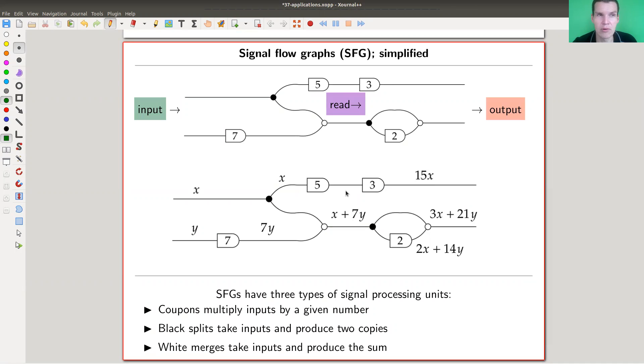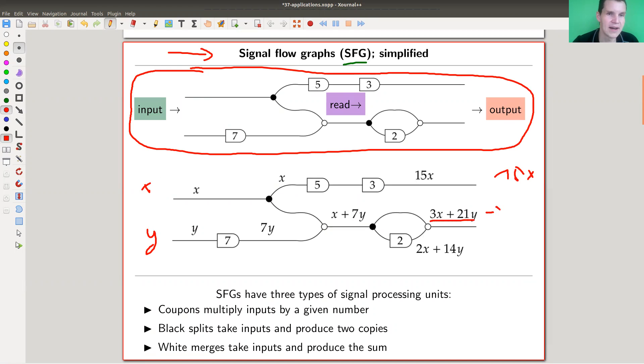Here I have a prop graph, or a signal flow graph SFG for short. My reading convention here is from left to right, input and output. There should be some input here, here downstairs I have an x, y input, and there will be some output here. You can read off the output here, so it's 15x and this thing is an output 3x plus 21y. This is how it works.